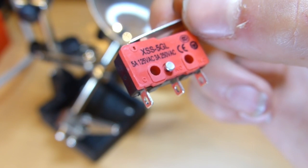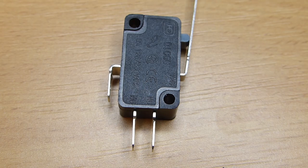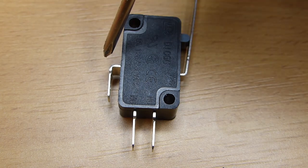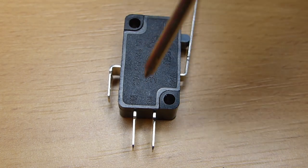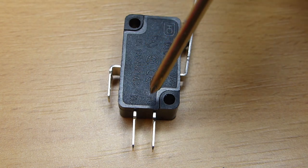One should say C or COM which stands for common, one should say NO for normally open, and one should say NC for normally closed. On these micro-switches, the side tab is always the common, and the normally open and normally closed are at the bottom.